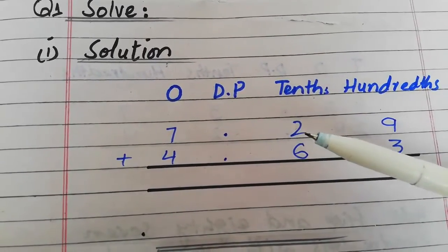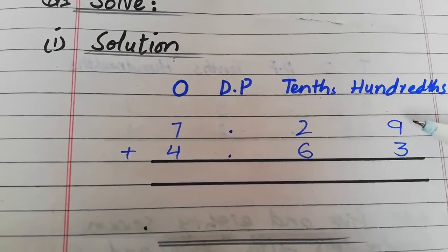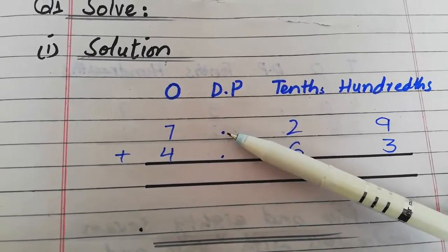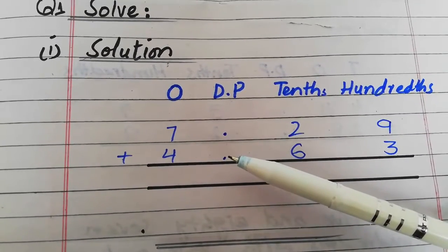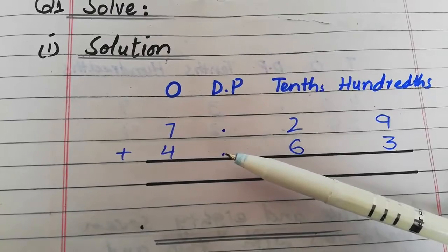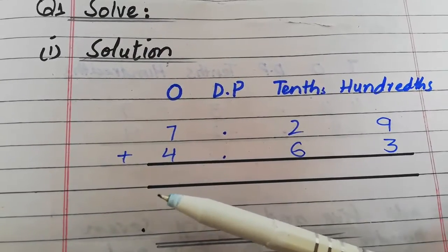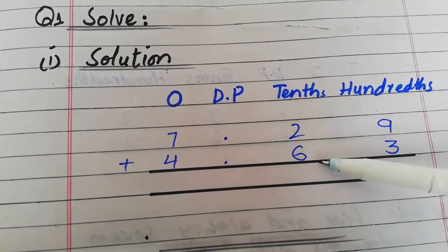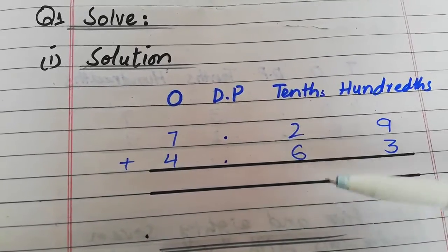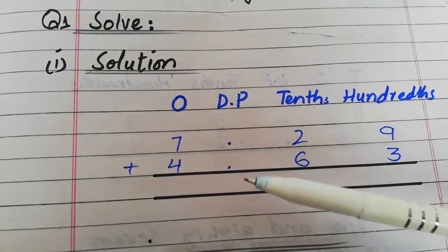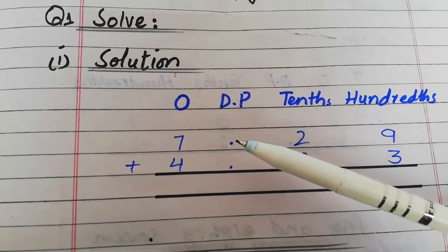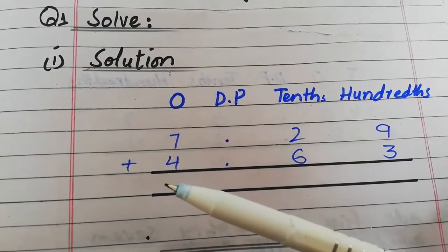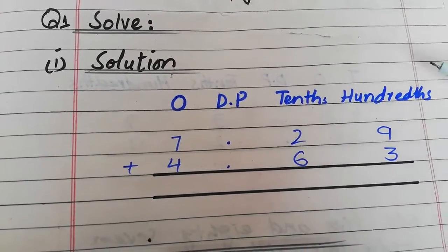Ones میں seven ہے، پھر decimal point ہے، پھر tenths میں two ہے، hundredths میں nine ہے — یہ first decimal number ہو گیا۔ اب second decimal number میں point کی نیچے point لگانا ہے۔ Addition and subtraction میں point کی نیچے point آئے گا۔ Integral part point سے پہلے اور fractional part point کے بعد لگائیں گے۔